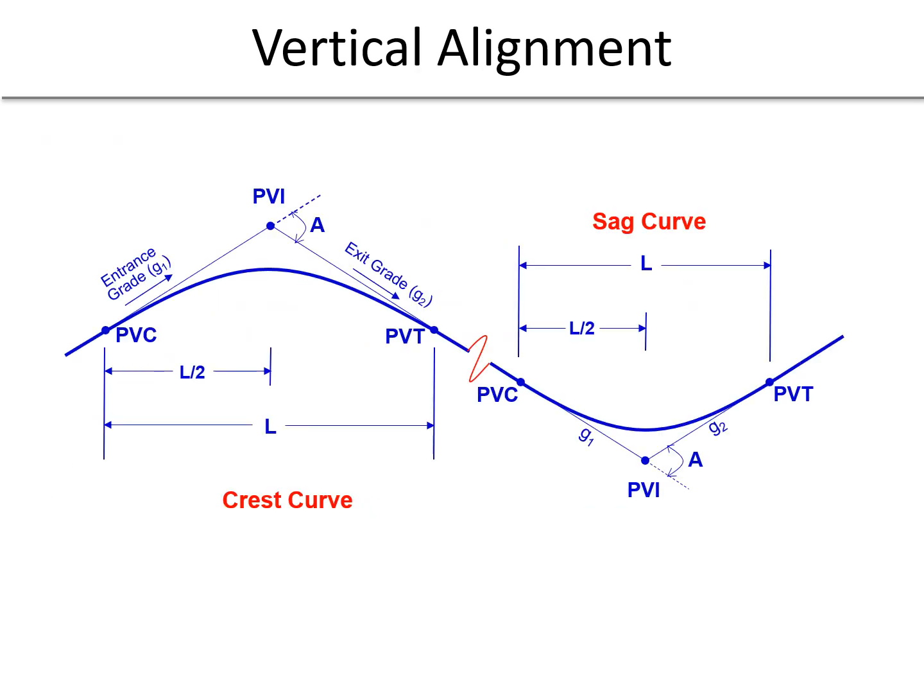There are two primary types of curves: a crest curve and a sag curve. A crest curve has a concave down shape and a sag curve has a concave up shape. For each type of curve, half the length of curve is on each side of the PVI, so for a symmetric parabolic curve, the PVI will always be halfway between the PVC and the PVT.